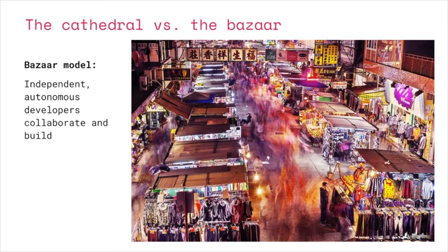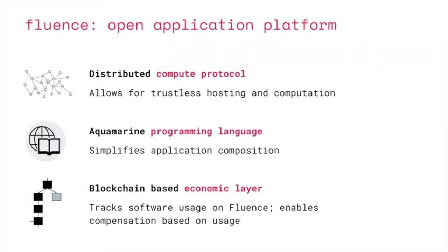What tools do you need to enable that? We think you need three things. First, a distributed compute protocol that allows for trustless hosting and computation, divorcing the application from the author, and allowing data and users to be shared without access being cut off. Second, a simple programming language that allows you to compose applications from running software incredibly quickly and easily — which we have. Third, a blockchain-based economic layer that tracks software usage and allows rewarding throughout the entire stack. We think you only really get to scale when there are economics involved.